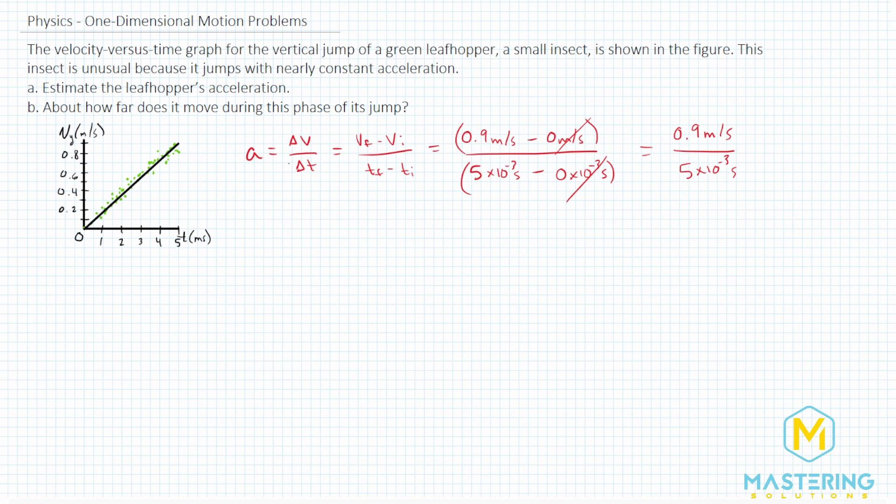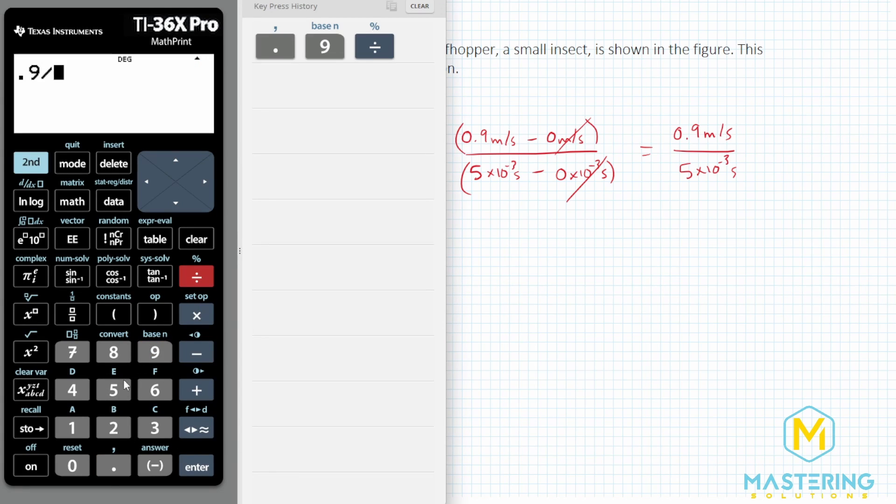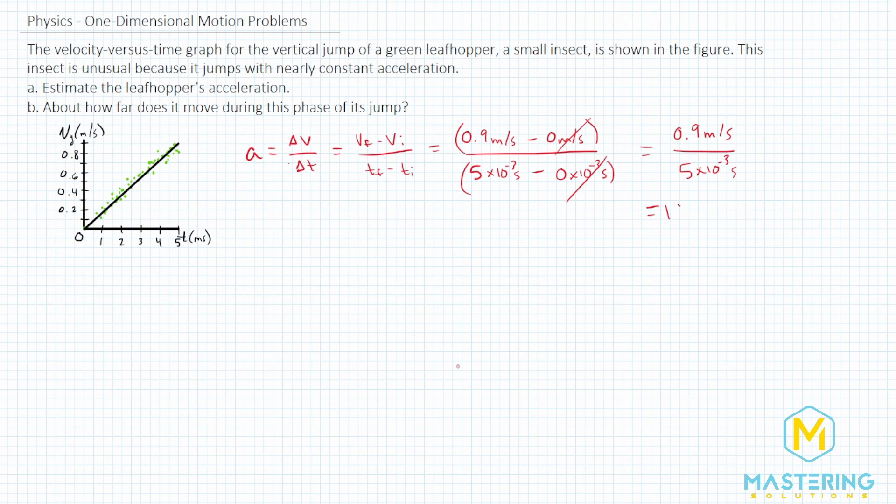So if we have 0.9 divided by 5 times 10 to the negative 3 gives us an acceleration of 180 meters per second squared. So that's our answer for part A.